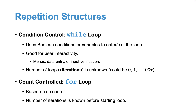We look at two broad categories of loops: condition-controlled and count-controlled. In the condition-controlled loop, we have a true/false condition that controls the number of times a set of actions are going to be repeated. In a count-controlled loop, we have a specific number of times that the program or statement is going to run.